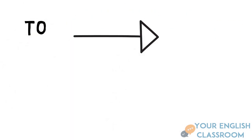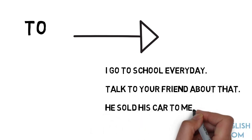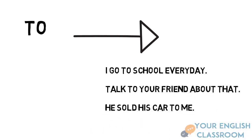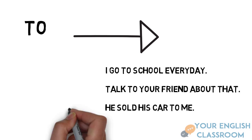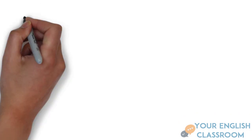Let's look at 'to'. 'To' actually means transferring from one place to another. For example: 'I go to school every day' — you're moving, transferring somewhere. 'Talk to your friend about that' — your speech is moving from one person to another. 'He sold his car to me' — the car was sold from one person to another. It's been moved, it's transferred.